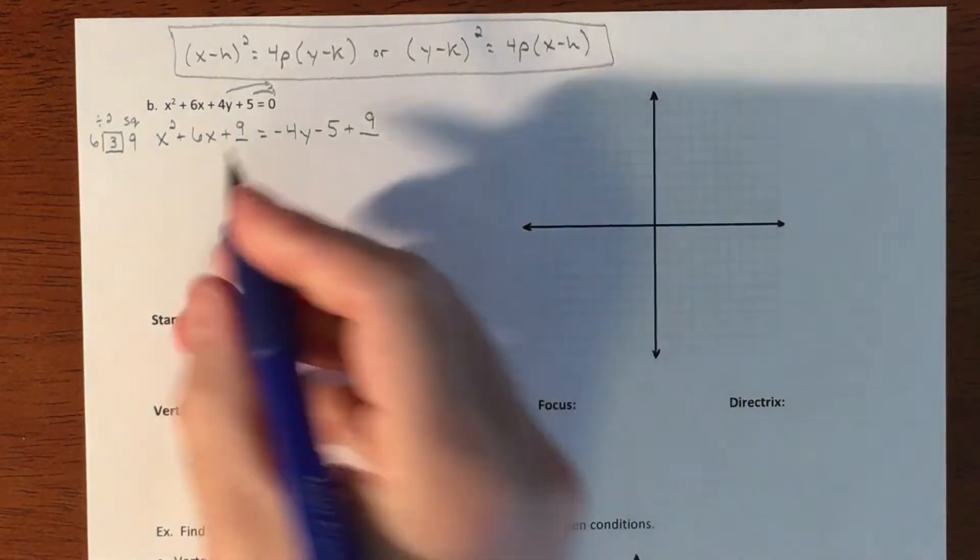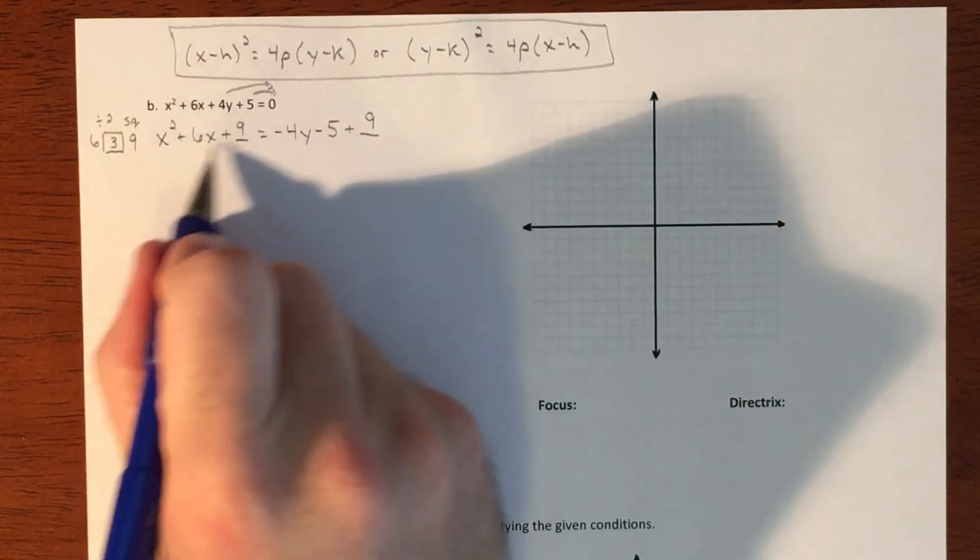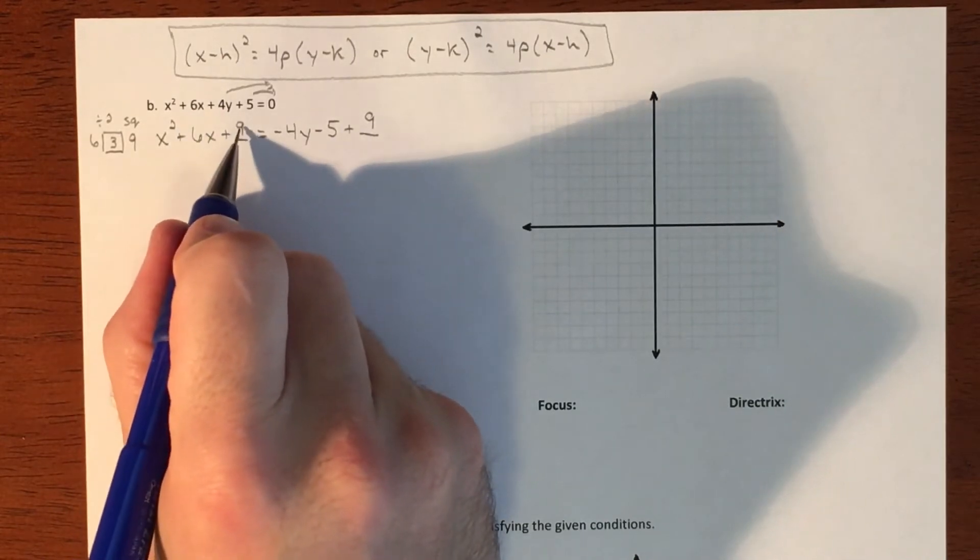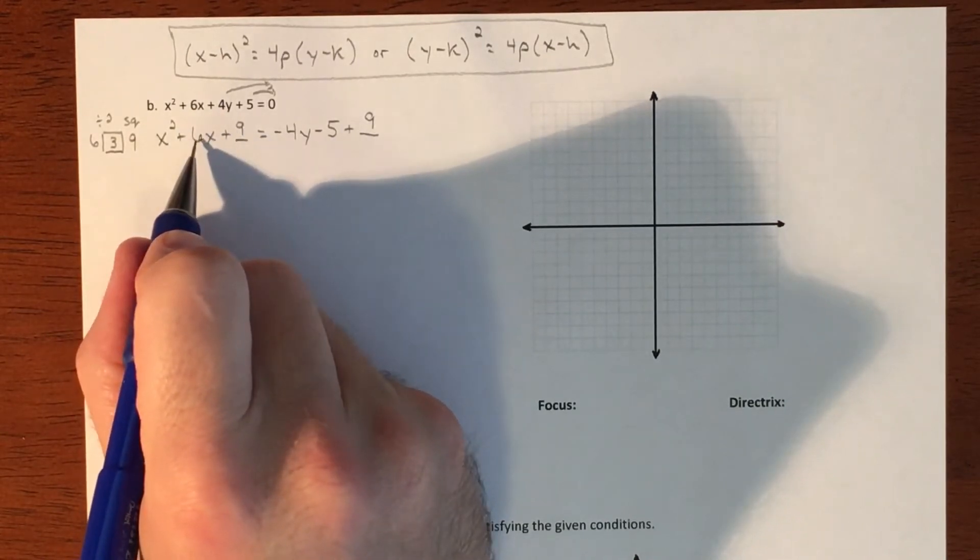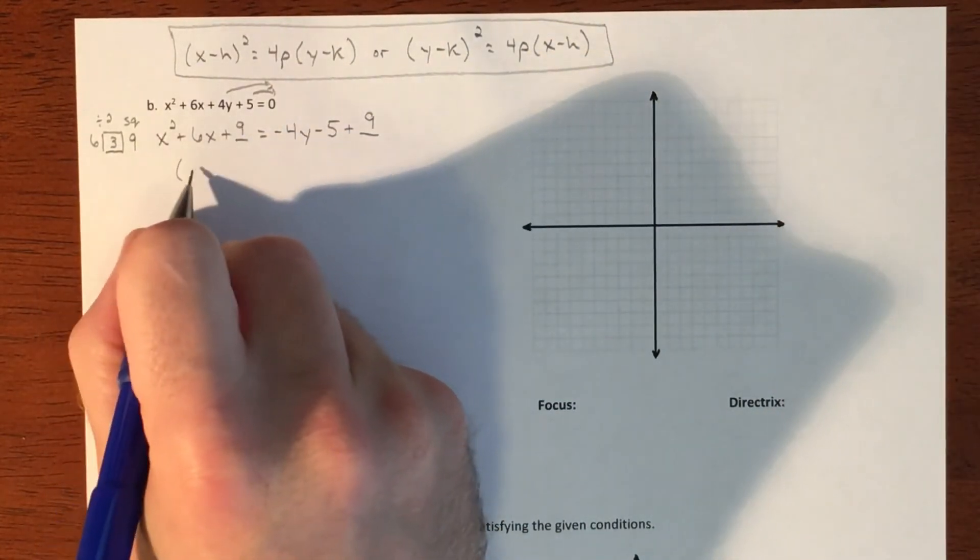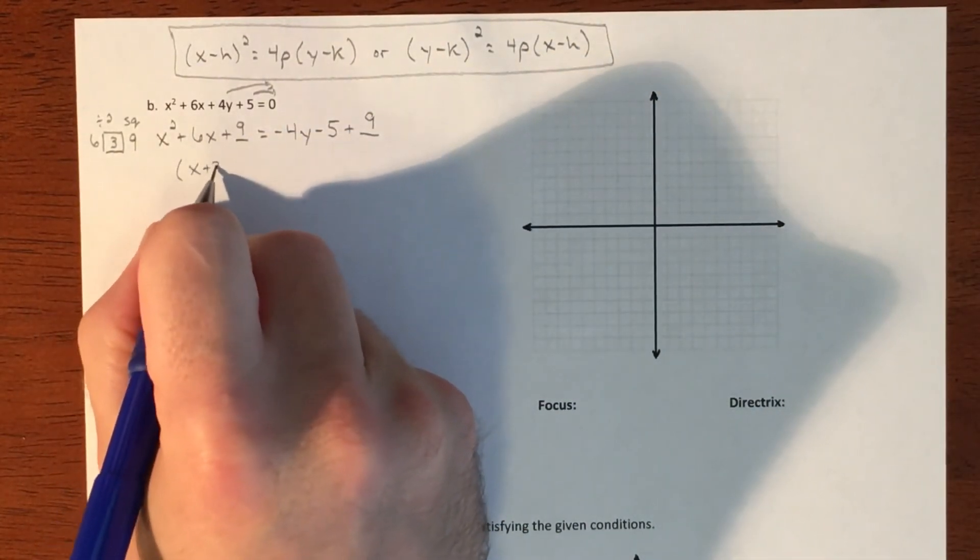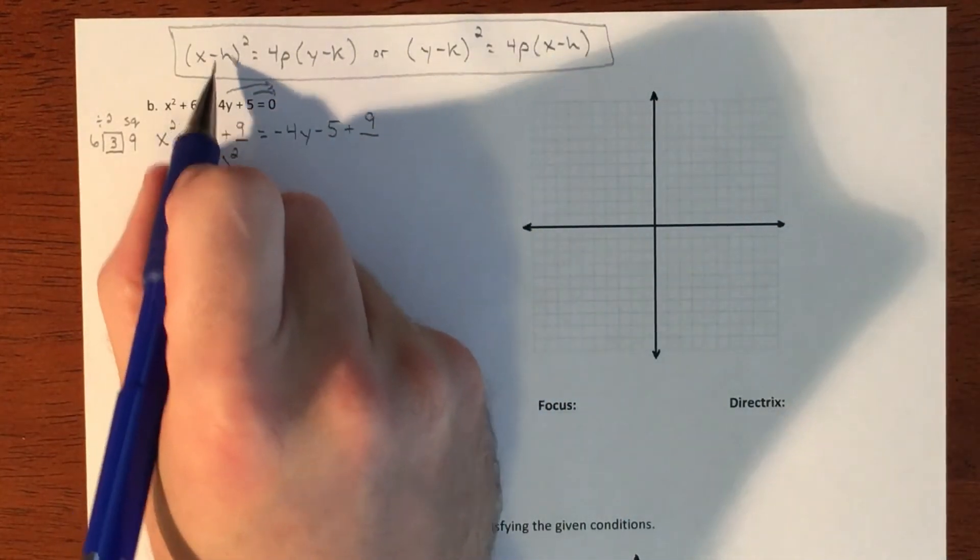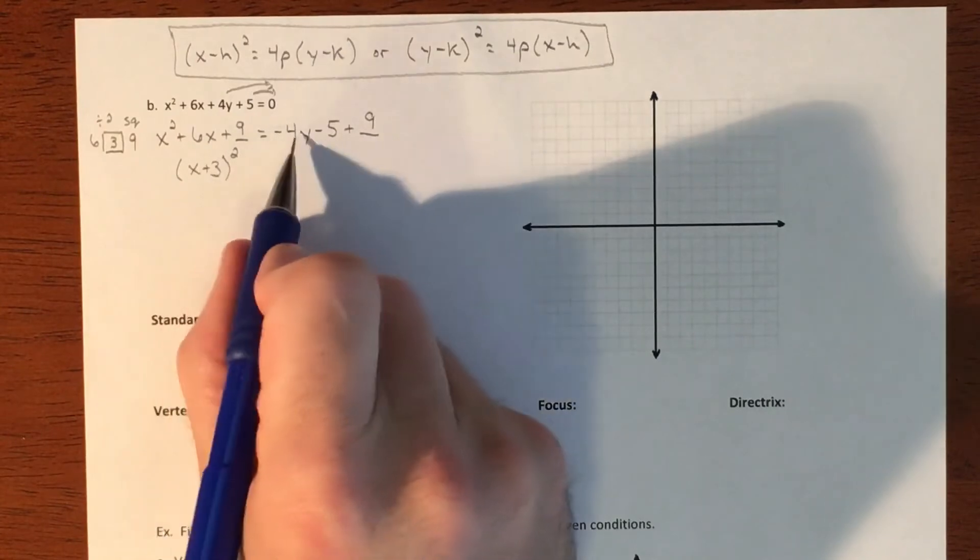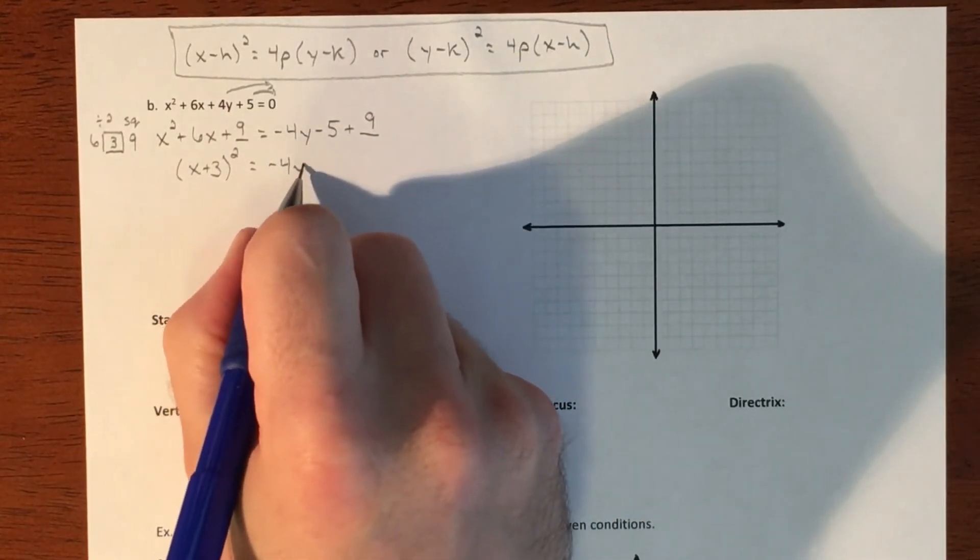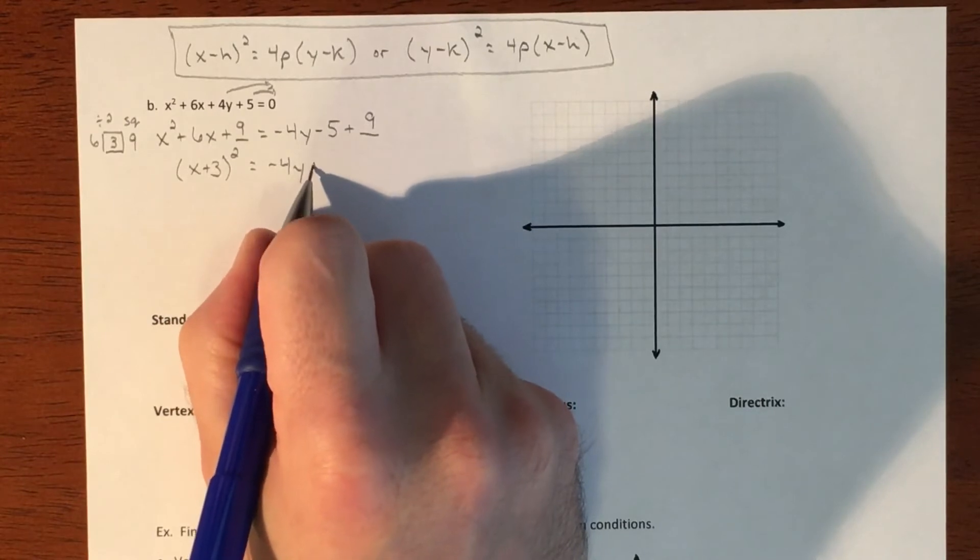And then we want to try and factor this. And so there's going to be something that's not a coincidence at all. What multiplies to 9 that adds to 6? 3 and 3. It is this value every single time. So it's going to be x plus 3. But rather than writing it out twice, I can write it like that, which perfectly turns it into what we need. So on the other side, we're going to put all this together. So we have a negative 4y plus 4.